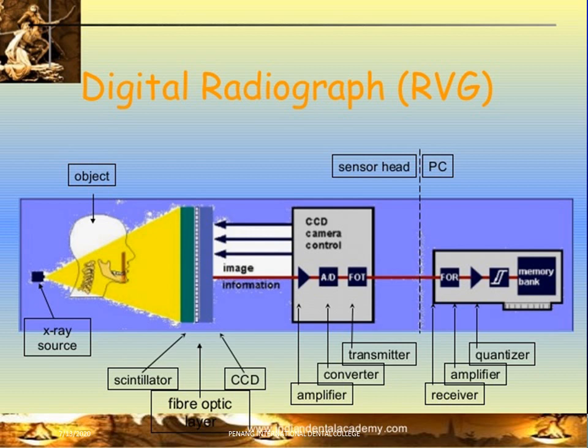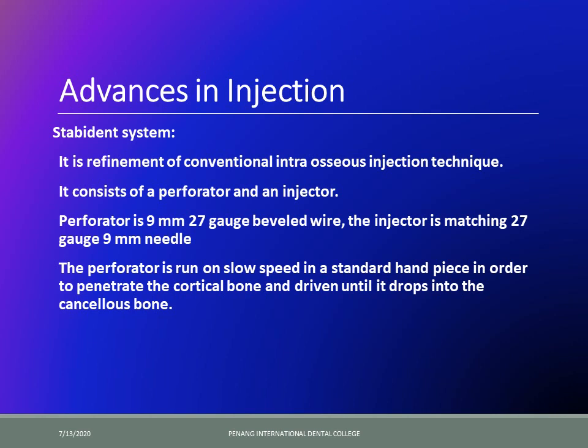As seen in the diagram, the x-ray source exposes the sensor placed inside the patient's mouth, which contains both the charged coupled device and the phosphor plate. The phosphor plate emits light captured by the charged coupled device, which is transmitted to the screen. After digitizing, you can appreciate the image on screen, and if you wish to print, you simply connect to the printer for as many copies as needed.